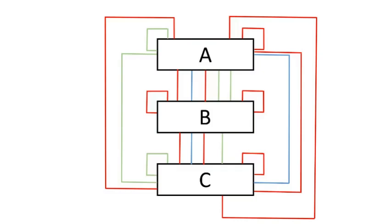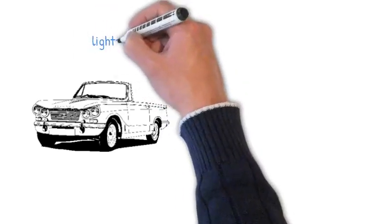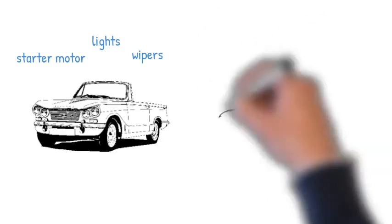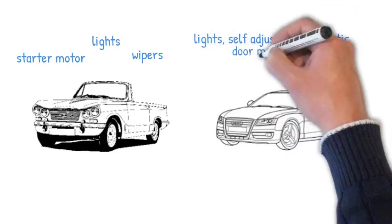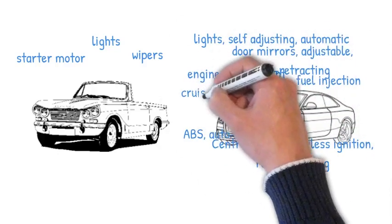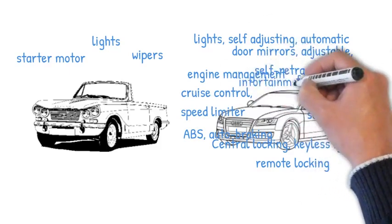Let's take a real-life example. Consider cars. My first car was a Triumph Herald, built in 1969 — a very beautiful car, designed to be maintained. If we look at the electrical system on the Triumph Herald, it had headlights, windscreen wipers, and a starter motor. That was it. If I compare that to the car I now own, the electrical system is orders of magnitude more complex — complex brake systems, locking, an infotainment system, and much more.